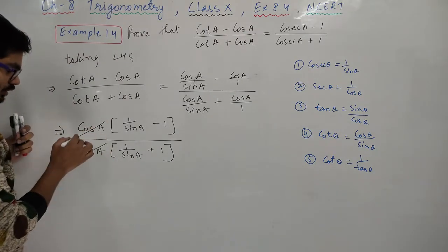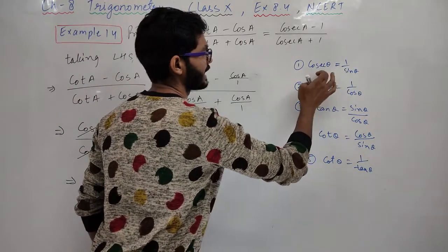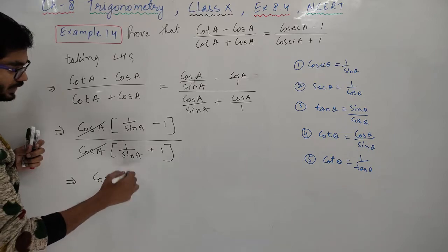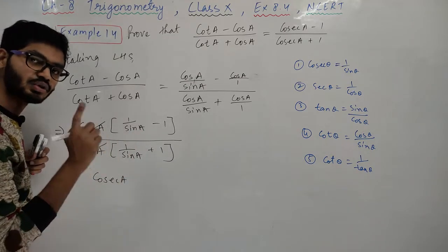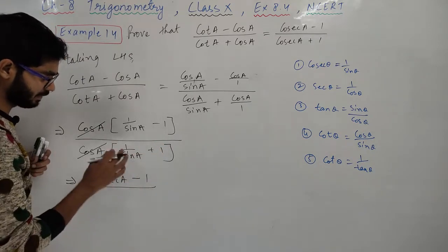Look, cos got cancelled by cos. One over sin, what is the formula for one over sin? Cosec theta. Because here instead of theta we have A, so we will write cosec A. In between there is minus, then one.